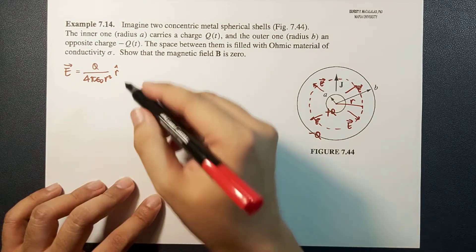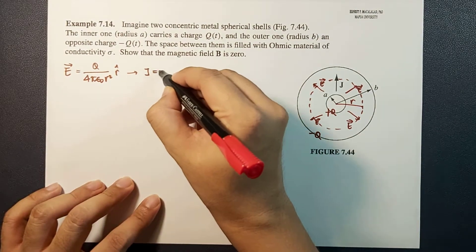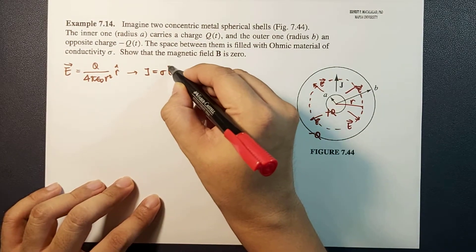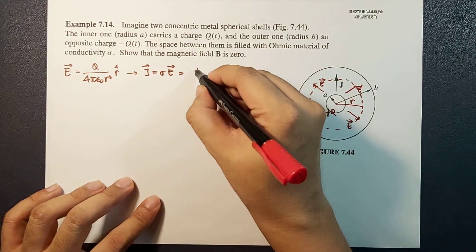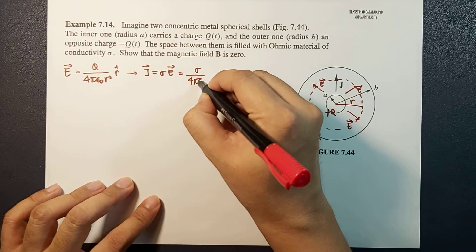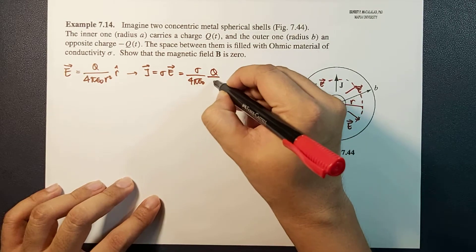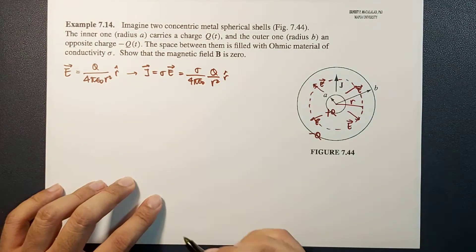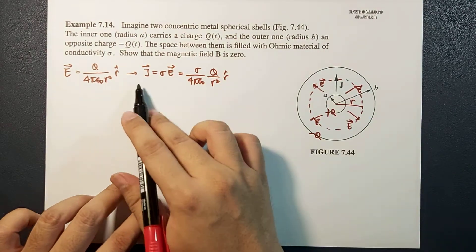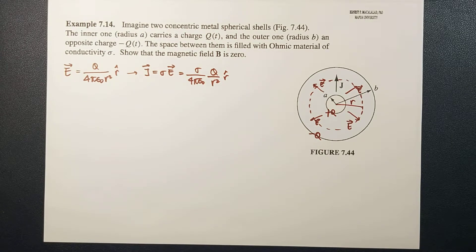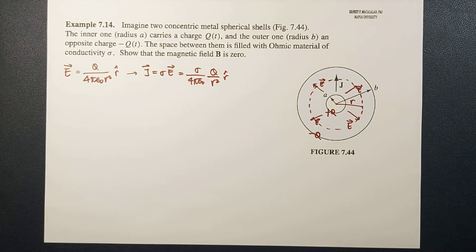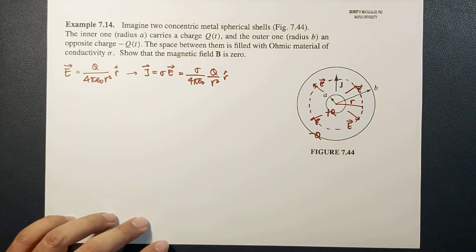From here, we can calculate the current density, which is J = sigma E. So in this case, this will be sigma over 4 pi epsilon naught times Q over R squared, R-hat. The current density J is radially outward, and because of this configuration, there is no way that a magnetic field will be produced.